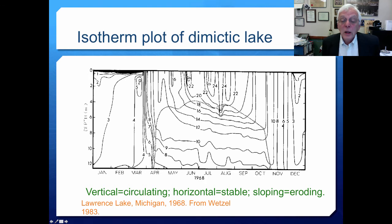The thermocline at four meters depth tells us something about the lake. When we discuss the physics of lakes later, we can guess this is a fairly small lake or one oriented crosswise to the wind, or some other factor that would limit mixing depth - but we can reserve that for another time.